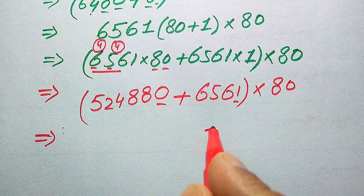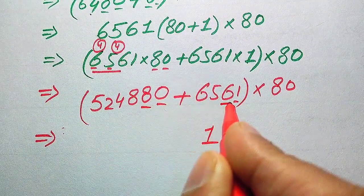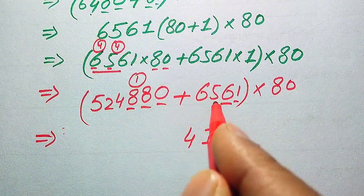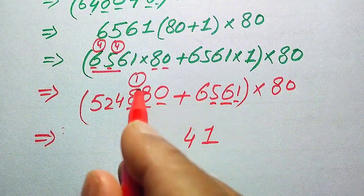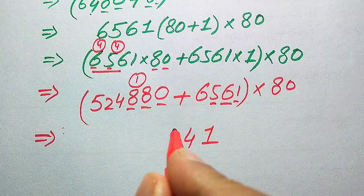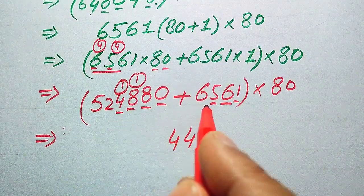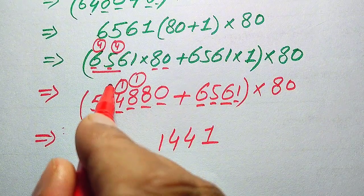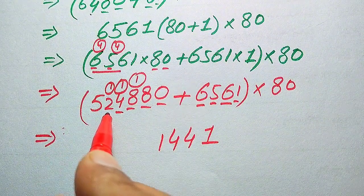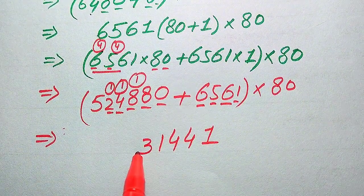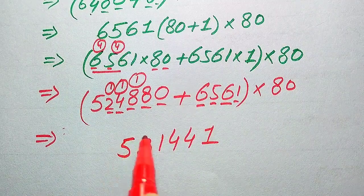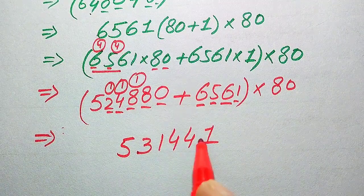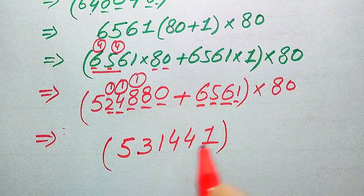We sum 524880 and 6561. Working through: 0 plus 1 is 1, 8 plus 6 is 14 write 4 carry 1, 4 plus 6 plus 1 is 11 write 1 carry 1, 2 plus 1 is 3, and finally 5. So the result is 531441, and this is multiplied by 80.